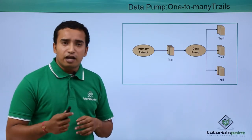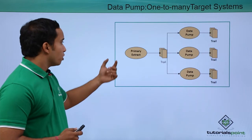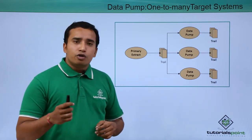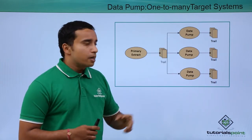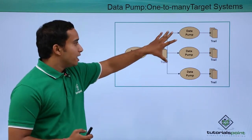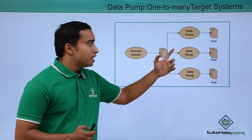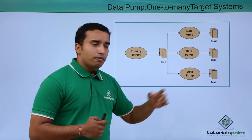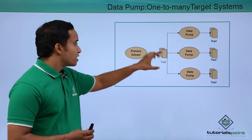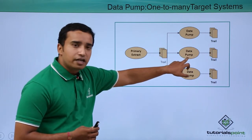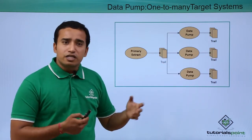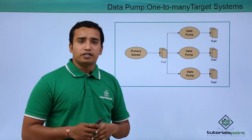This is known as one-to-many trail files. Alternatively, your primary extract extracts the data and puts it into a local trail file, and you can configure multiple data pump processes sending the data to different databases. You can manipulate and segregate the data across multiple trail files. Or in the simple configuration, your primary extract extracts the data, puts it into a trail file, and you have a single data pump process sending that trail file to one target database.